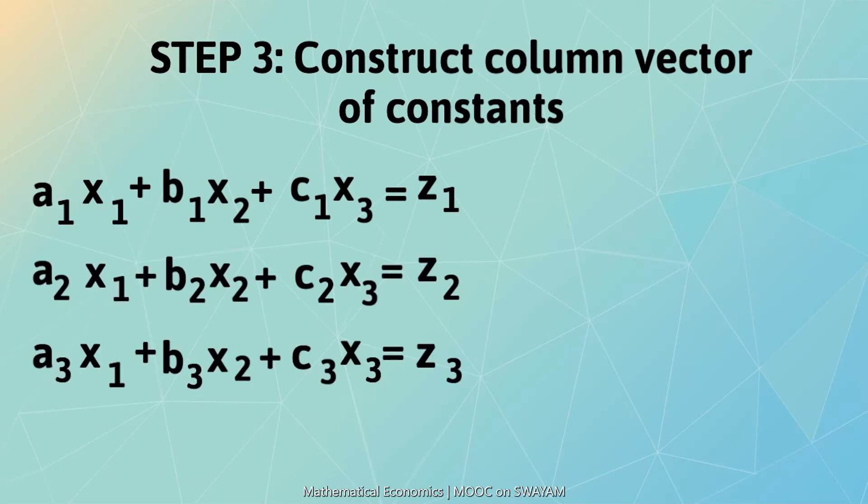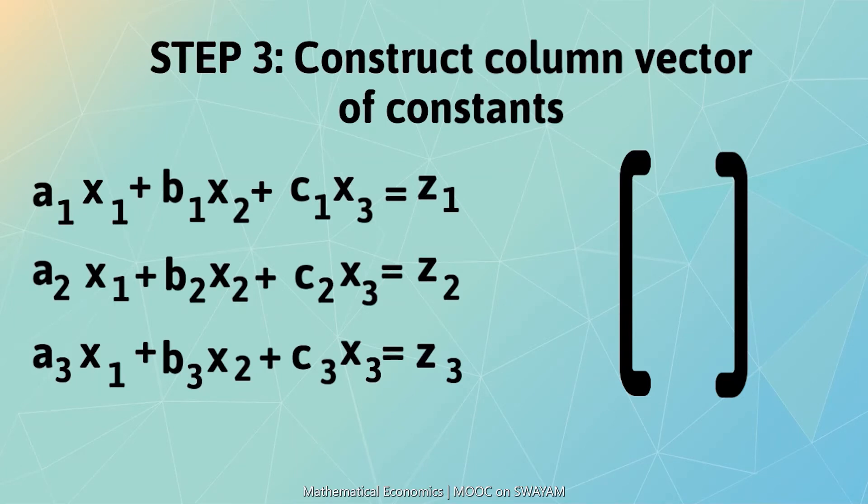In the third step, we construct a column vector of the constants and name it z. z is also a column vector of order 3 by 1.